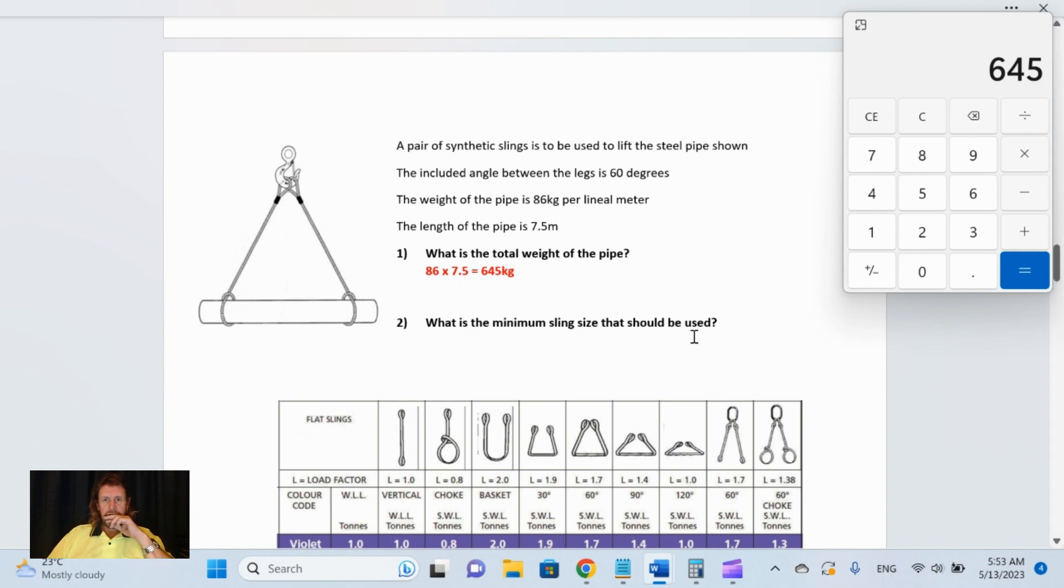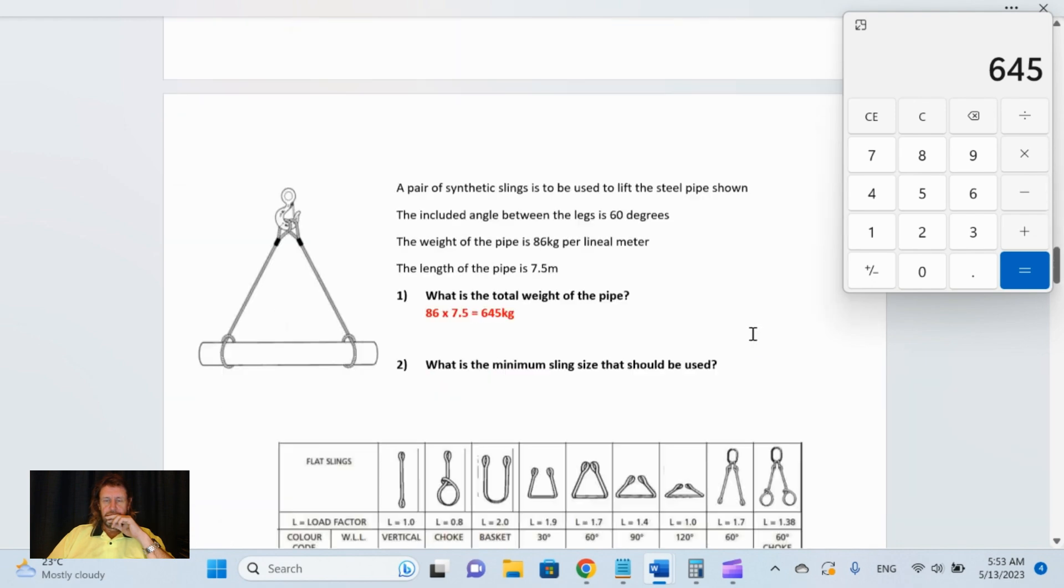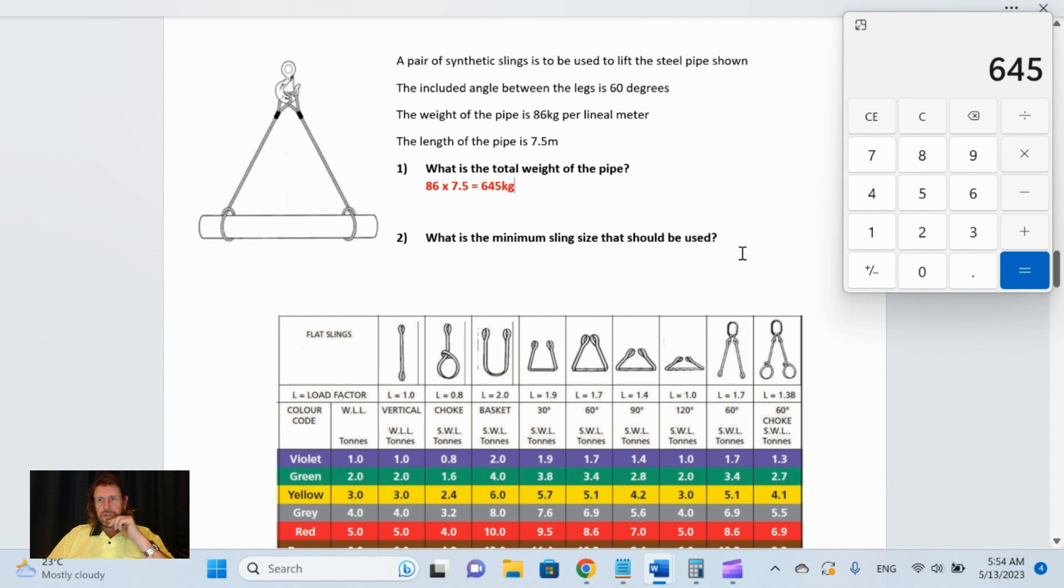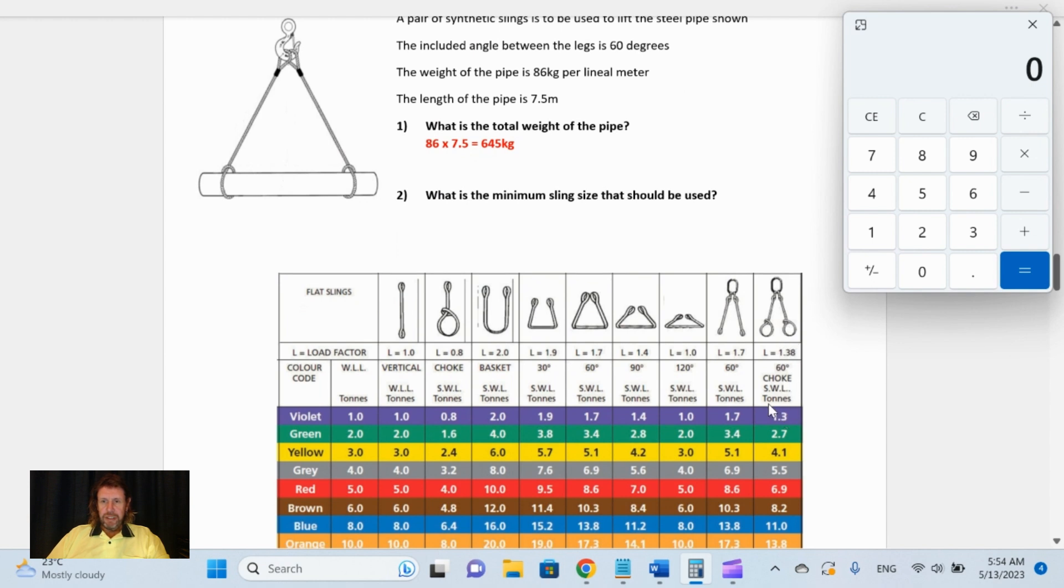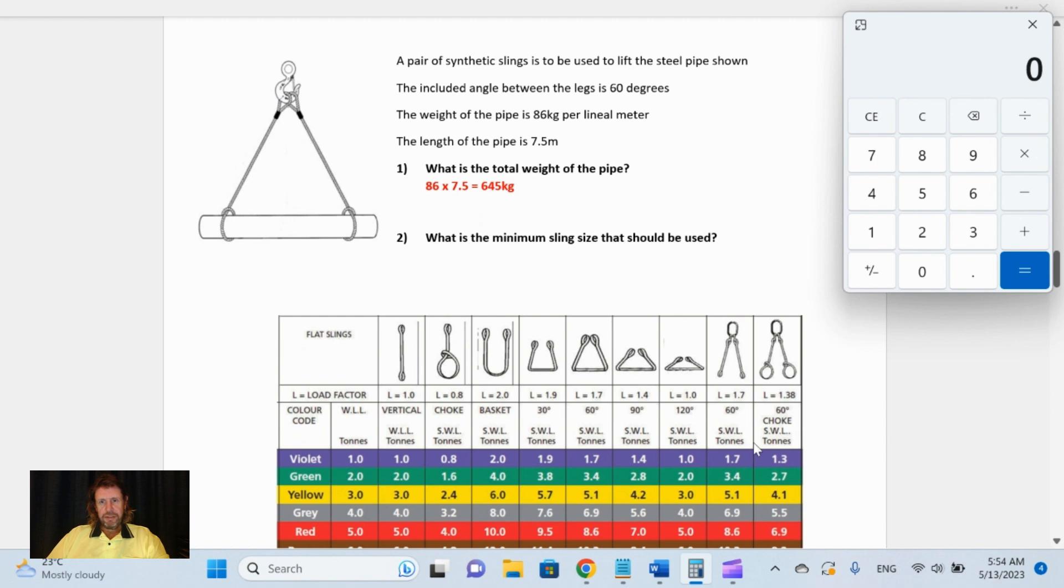The minimum sling size that should be used: it's configured like this—it's choked and it's at a 60 degree angle. The question's asking what is the minimum size sling that should be used. You obviously need two slings. The angle factor, once you put this on the pipe, derates it to 1.3. So if this was a one ton sling and a one ton sling, because you're opening them up and you're choking them, it'd only be good to lift a 1.3 ton load. However, the question is asking what is the minimum size sling that should be used.